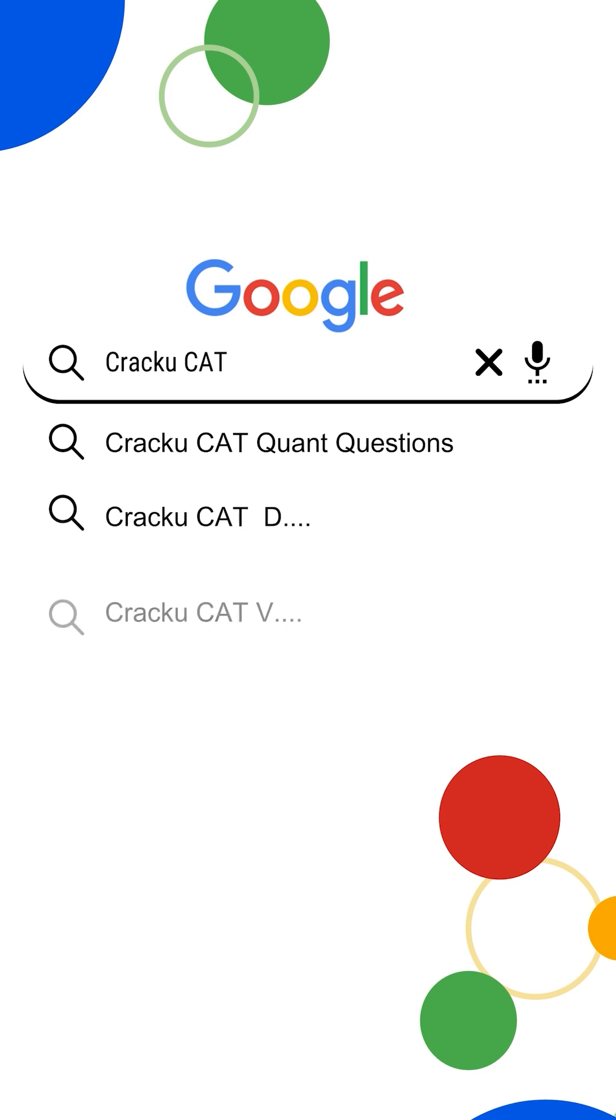To download all important formulas for CAT and for quick revision, just go to Google and search Cracku CAT formulas PDF.